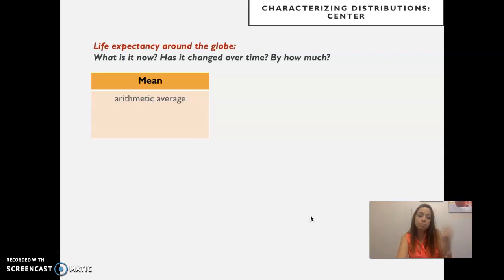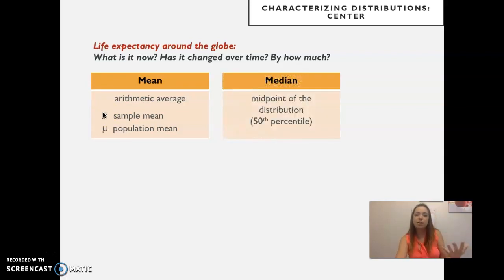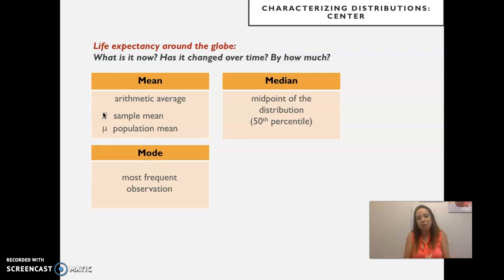And we have some options to characterize the center of the distribution. The mean, which is the arithmetic average. Here we have a typical symbol that you'll see around statistics for sample mean. But this is the population mean. So there is a true mean of the population if you consider every single person. But then when you do studies, you sample from the full population and then you would get the estimated mean, the sample mean. And the symbols are different. Another way to characterize the center of the distribution is the median. It's midpoint of the distribution, the 50th percentile. And the third is the mode, which is the most frequent observation.